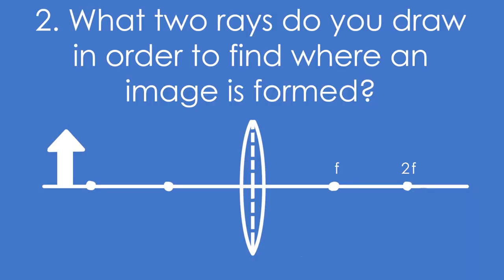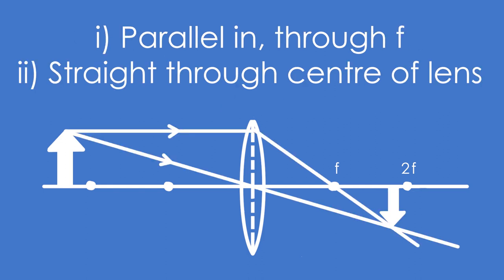What two rays do you draw in order to find where an image is formed? Draw it from the top of the object, one ray going parallel in, then through the principal focus, and the second one goes straight through the center of the lens. And where they converge, that's where the image of the top of the object is going to be formed.